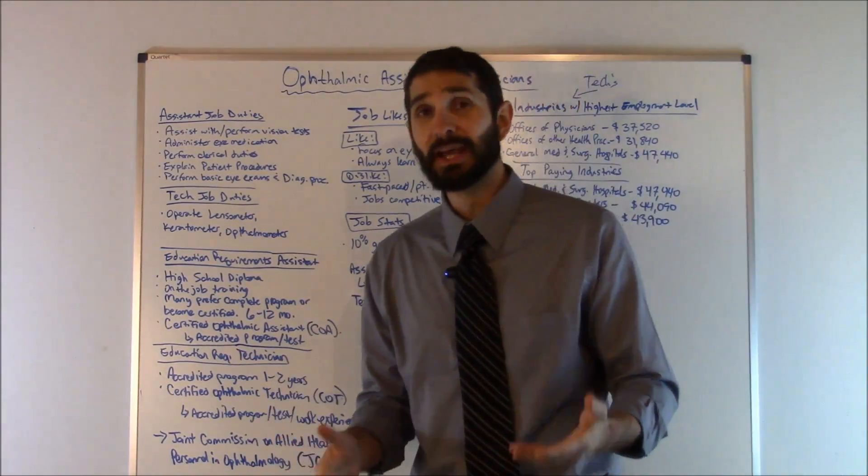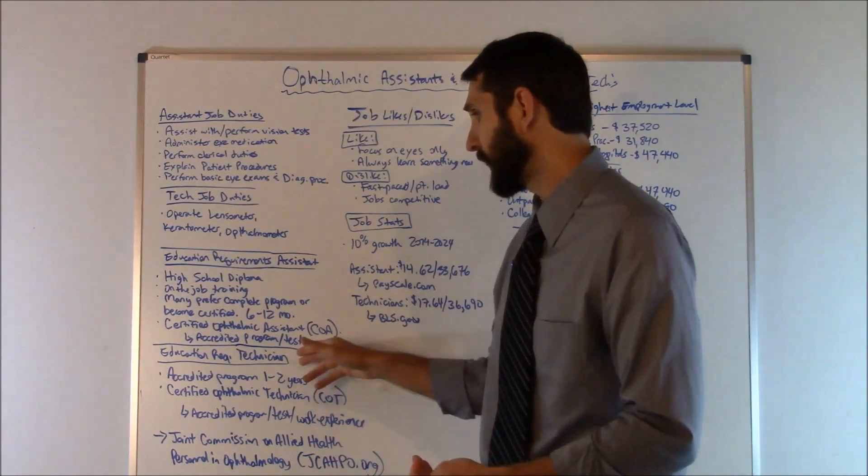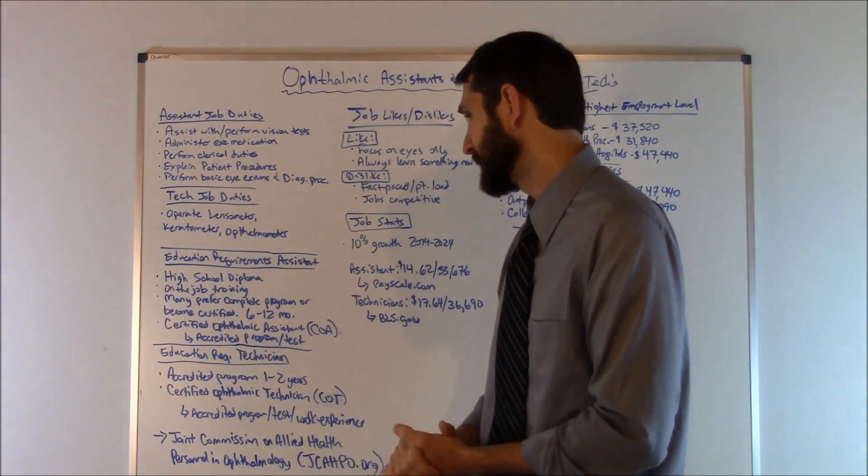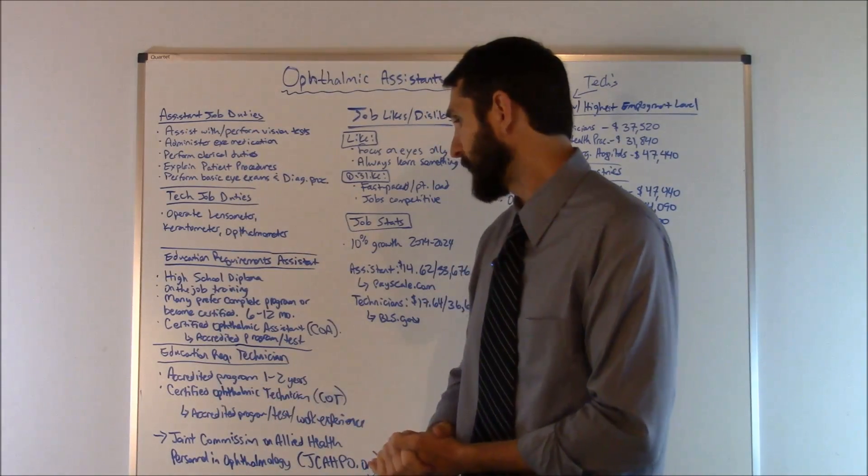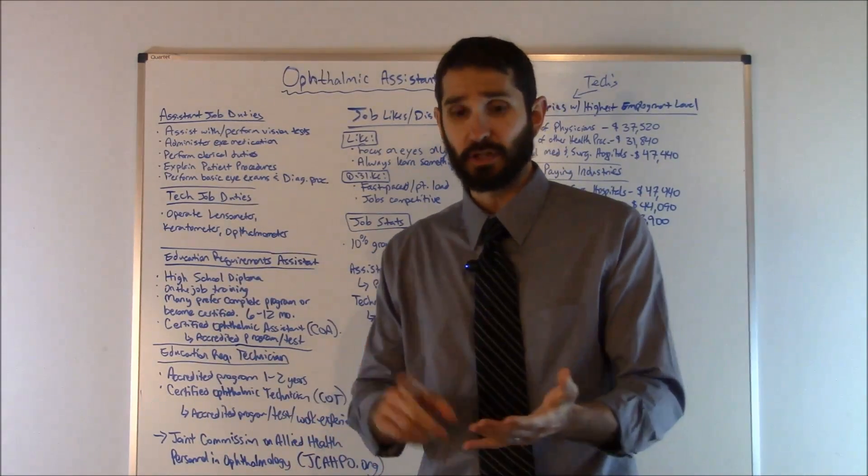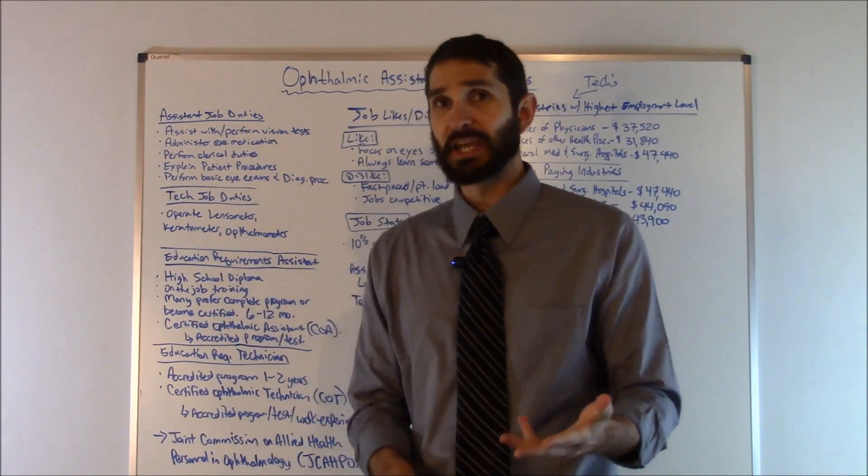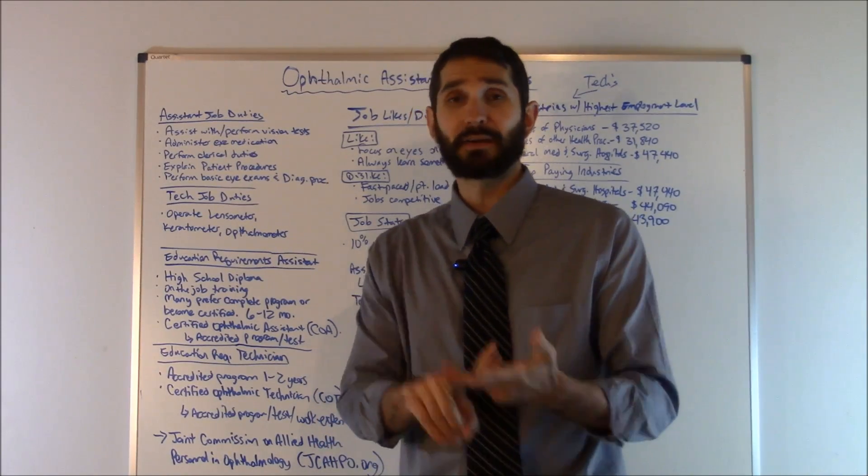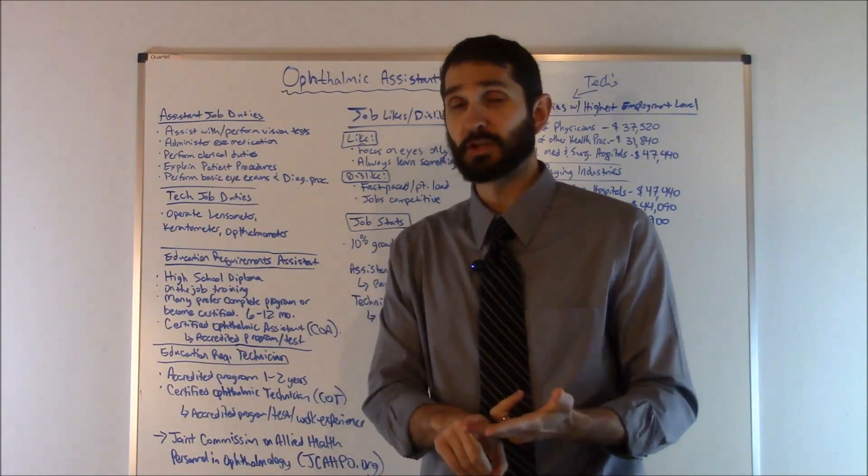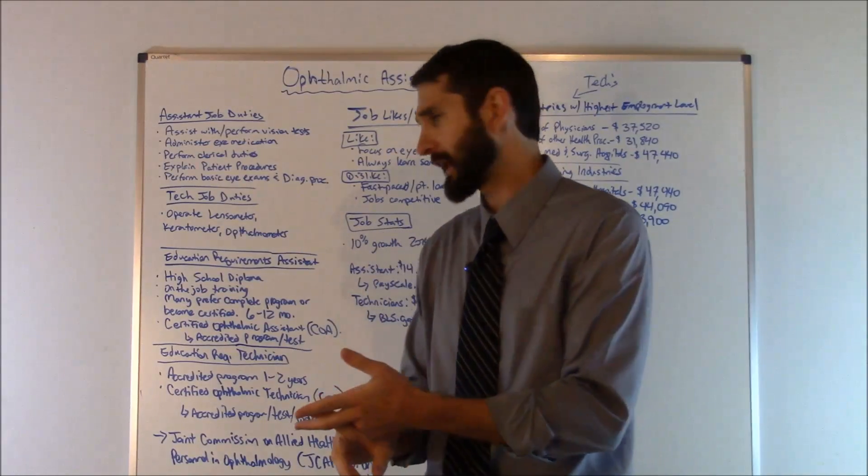Now, for the technician, it takes a little bit longer. Those programs are usually between one to two years, and you will become a certified ophthalmic technician after you pass the certification exam, complete the education requirements, and sometimes you will have to have on-the-job experience for the certification, depending on which level of certification you go with.